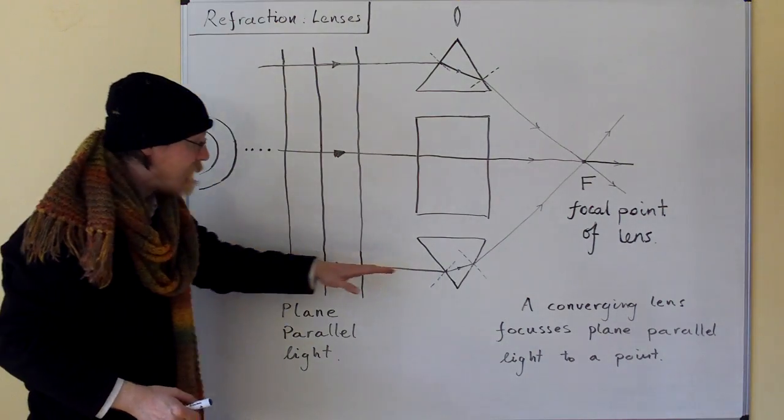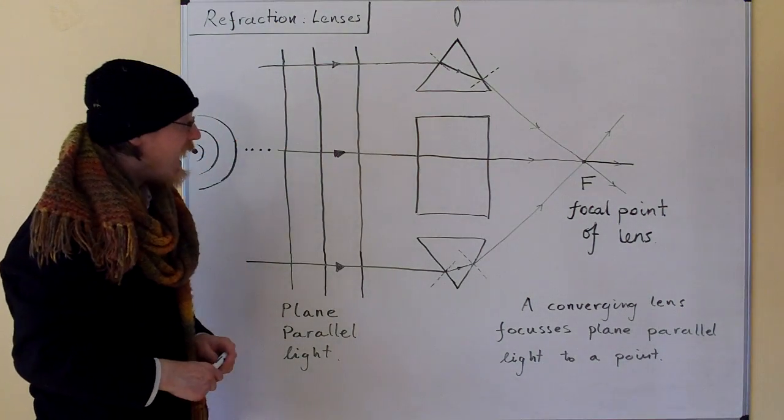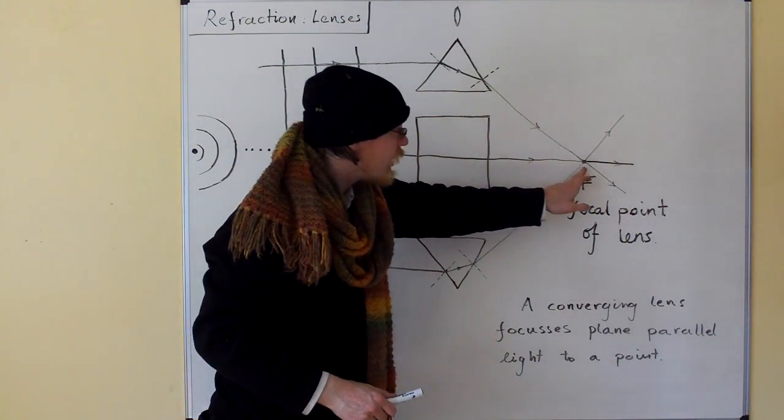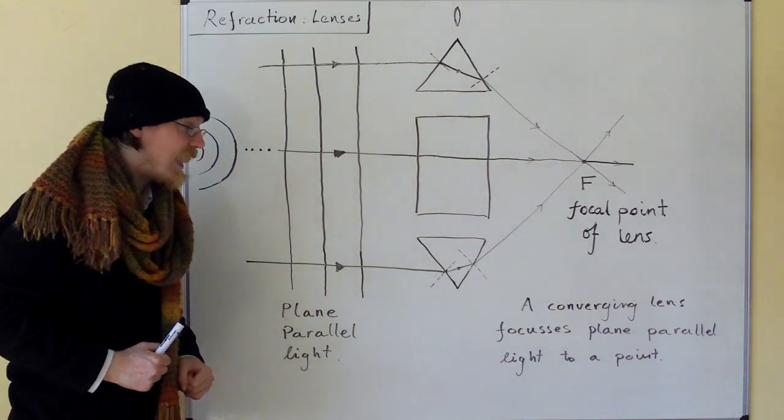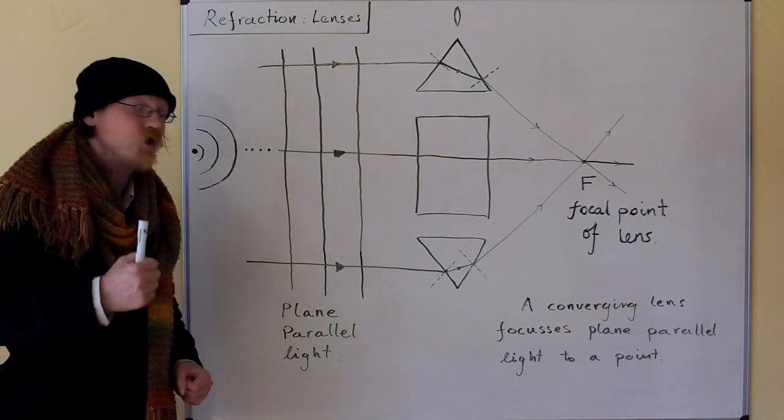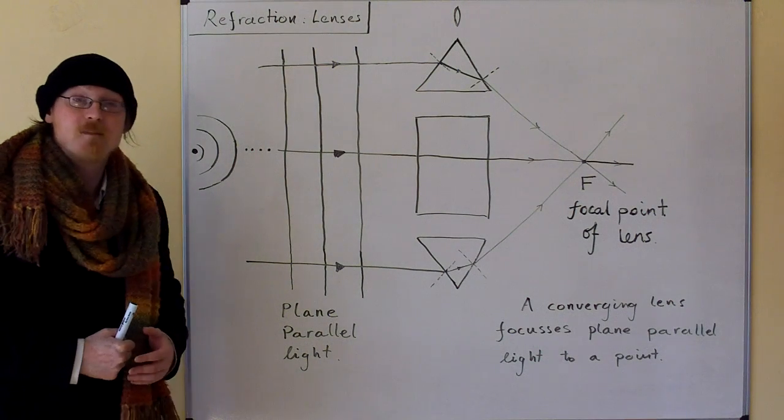The reverse process happens at the bottom, and the light is focused to a point. A converging lens focuses plain parallel light to a point. Thank you very much.